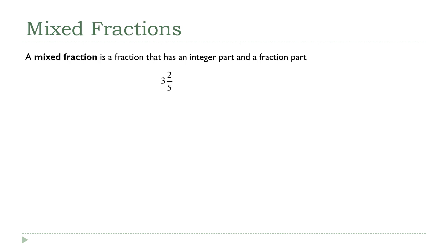The reason I'm talking about improper fractions is because they connect to this other way of writing fractions called a mixed fraction. We call this a mixed fraction because it's a mixture of an integer part, that's the 3, and a fraction part, that's the 2 fifths.